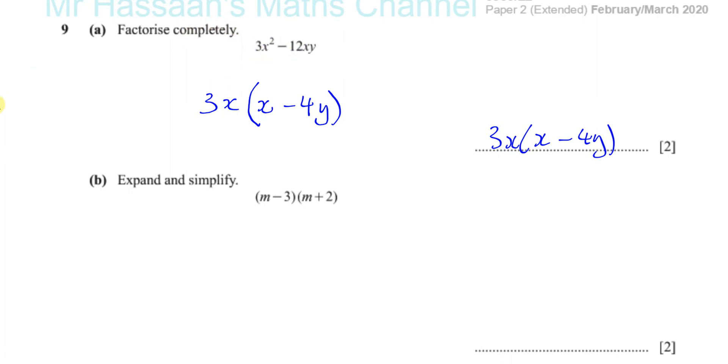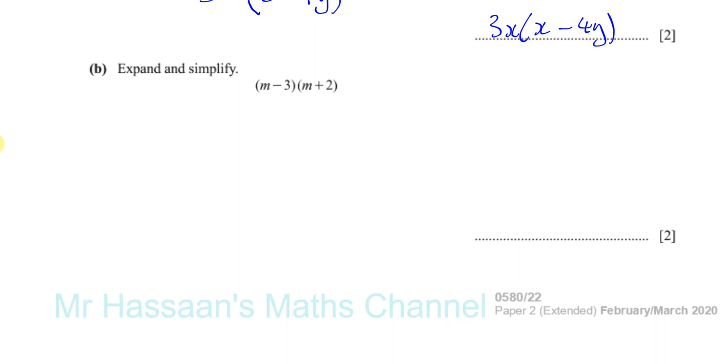Okay, then it says expand and simplify m minus three times m plus two. Well, if you use the pattern it's going to be slightly different. You're going to have m squared.